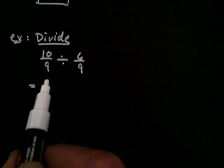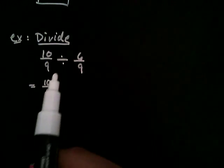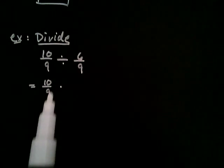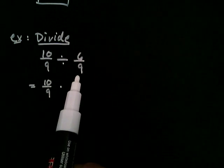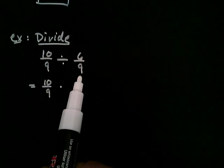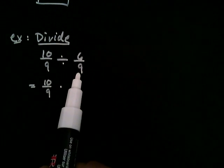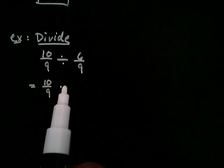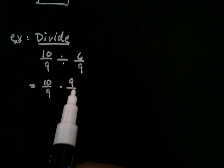So ten over nine, that remains as it is. Division gets changed to multiplication, and here's the important part. You have to take the reciprocal of the second fraction. And the reciprocal is just what you get when you flip the fraction. So six over nine is now nine over six.